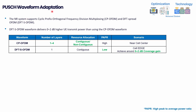Moving forward to the next feature — PUSCH waveform adaptation. In 5G, PUSCH waveform supports two modes: the first is CP-OFDM (Cyclic Prefix Orthogonal Frequency Division Multiplexing), which is the default. Its resource allocation can be contiguous or non-contiguous, making it very flexible. It can transfer up to four layers depending on UE capability. However, its main drawback is having a high PAPR — Peak-to-Average Power Ratio.